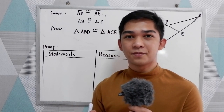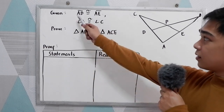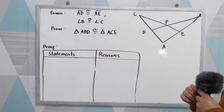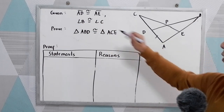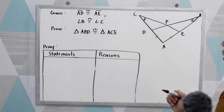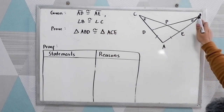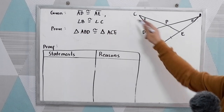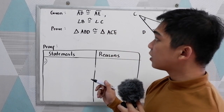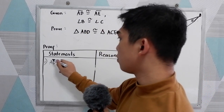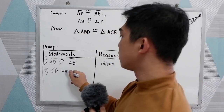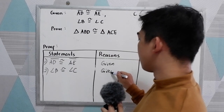Let's have our third example. Given: AD is congruent to AE, and angle B is congruent to angle C. We are going to prove that triangle ABD is congruent to triangle ACE using the two-column proof. In our statements and reasons, write all the given. So AD is congruent to AE — that is given. Second, angle B is congruent to angle C — that is also given.